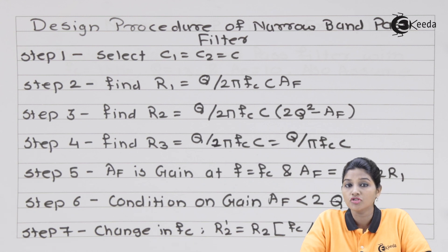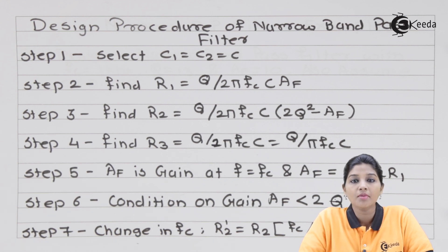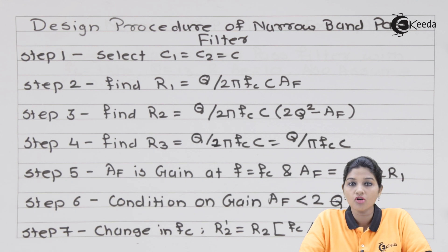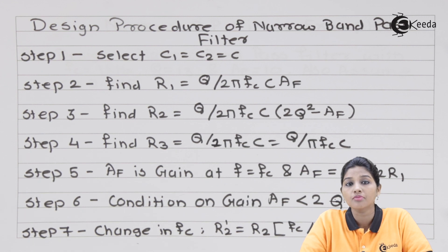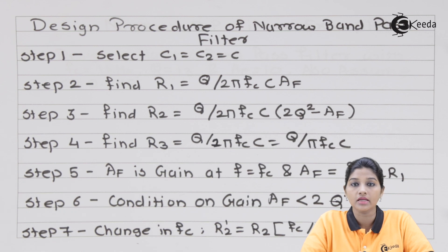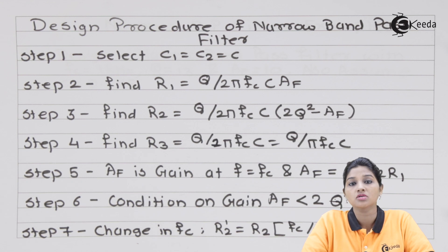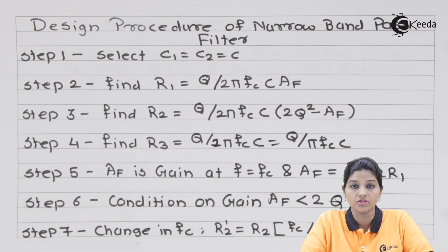In case of a narrow band pass filter, multiple feedback paths are used. These are important features of the narrow band pass filter. Because it uses the op-amp in inverting configuration and multiple feedback paths, the designing process of a narrow band pass filter is quite different from other filters. The design process involves various steps that require certain values to be assumed and calculated.